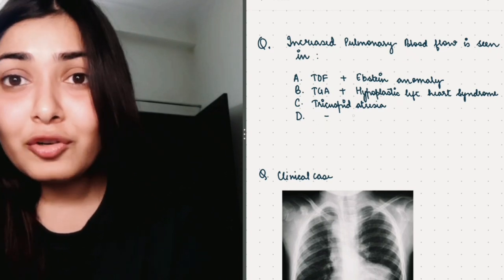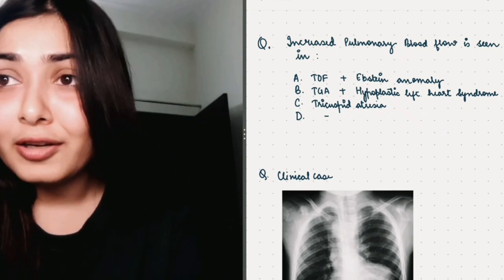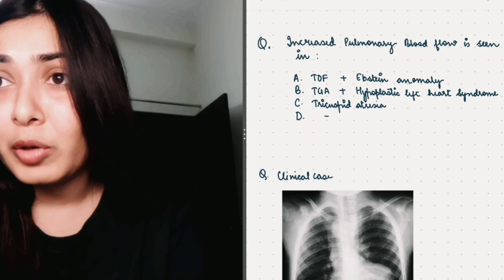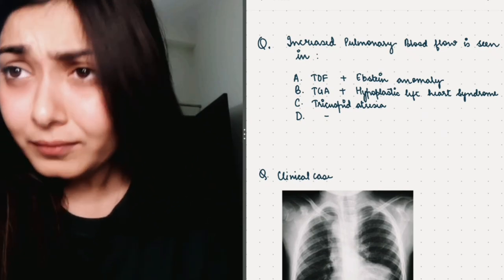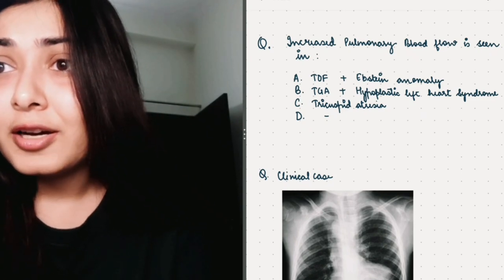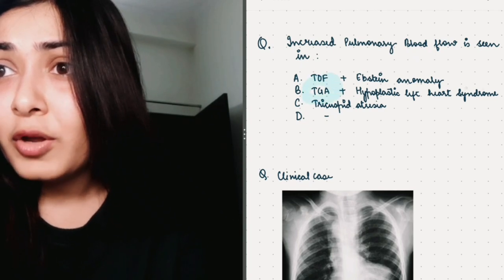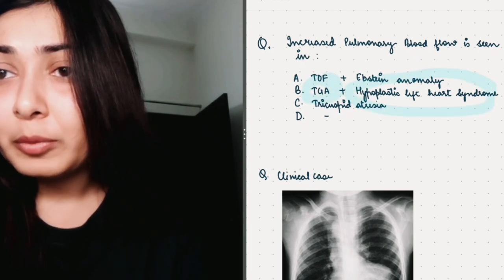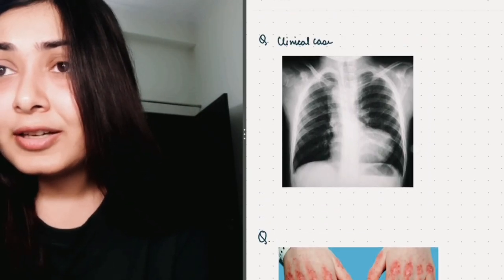Second option was transposition of great arteries that is TGA and hypoplastic left heart syndrome and C was tricuspid atresia. So tricuspid atresia, there is obviously decreased blood flow. In tetralogy of fallot, again decreased blood flow. Ebstein anomaly, atrialization of the ventricle, again decreased blood flow. The correct option here is the one with TGA and hypoplastic left heart syndrome where there will be increased pulmonary blood flow.